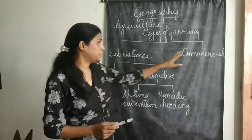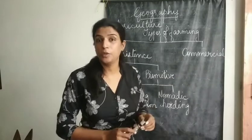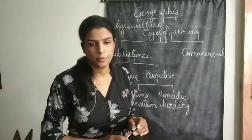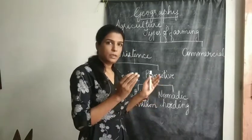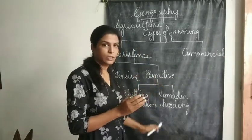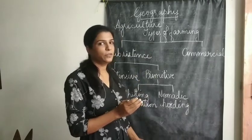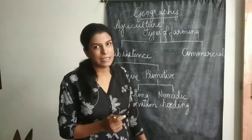Taking into consideration all these parameters, we can divide the types of farming under two major categories: one is subsistence and the other one is commercial. For this particular lecture we will cover subsistence; commercial will be dealt with later.